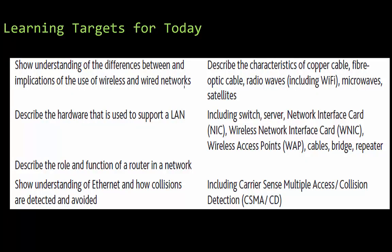The learning targets: we want to show an understanding of the differences between and the implications of the use of wireless and wired networks, covering all the different types of cables as well as wireless. We're going to describe the hardware used to support a local area network — that is a switch, a server, the network interface card, wireless network interface card, wireless access points, cables, a bridge, and repeater. We'll also cover the role and function of a router in a network, and how collisions are detected and avoided using the CSMA/CD protocol.